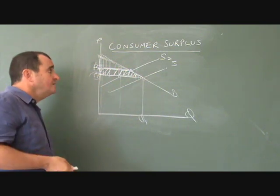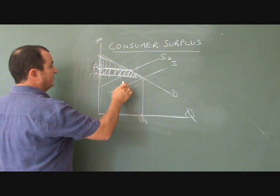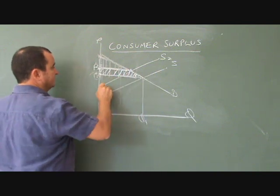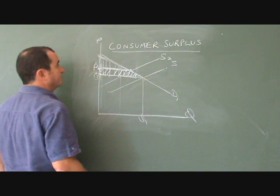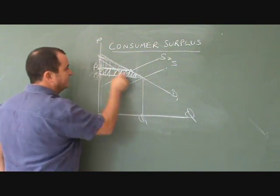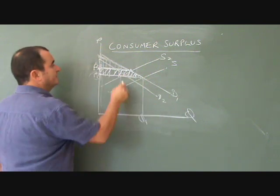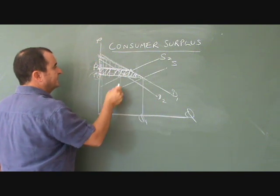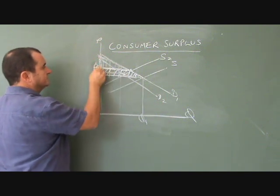If the demand curve had shifted, and now I'm working with this consumer surplus and S2, if demand for the good, let's say, fell to D2, then this would be the new equilibrium price, and this would represent the new consumer surplus.